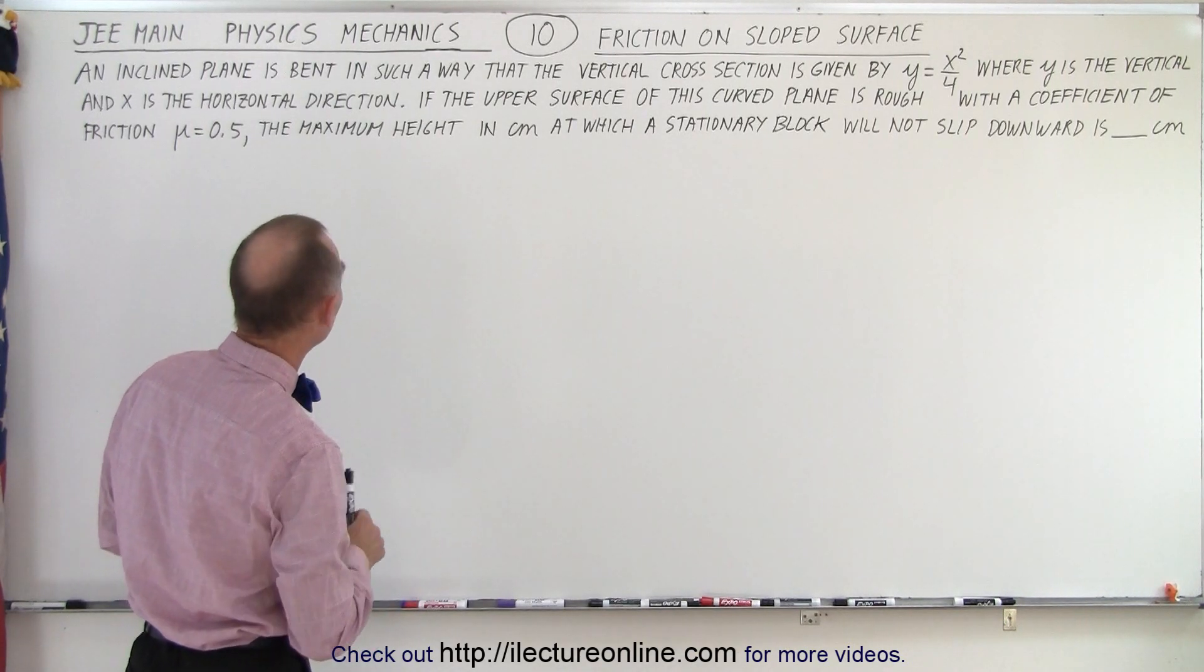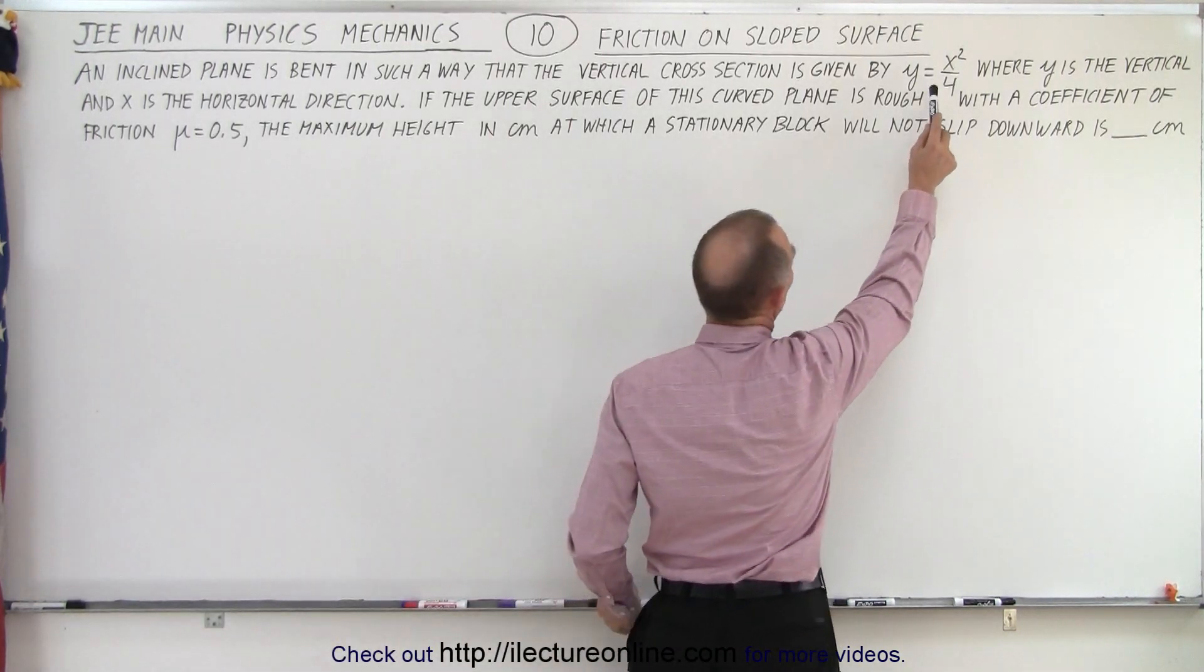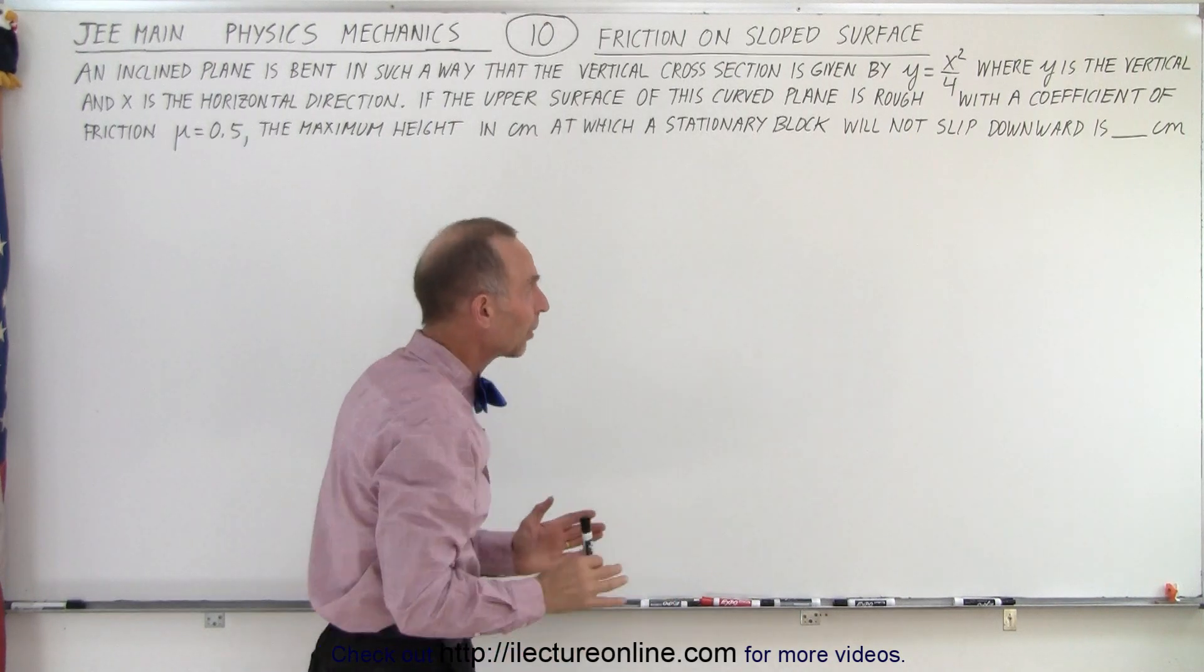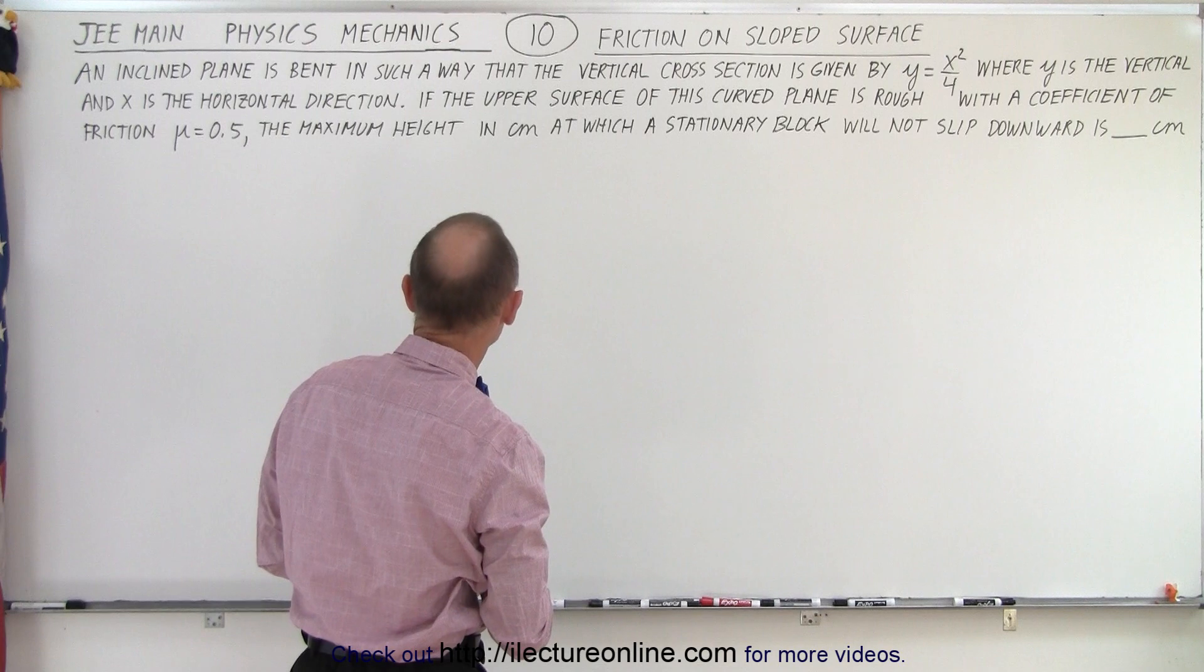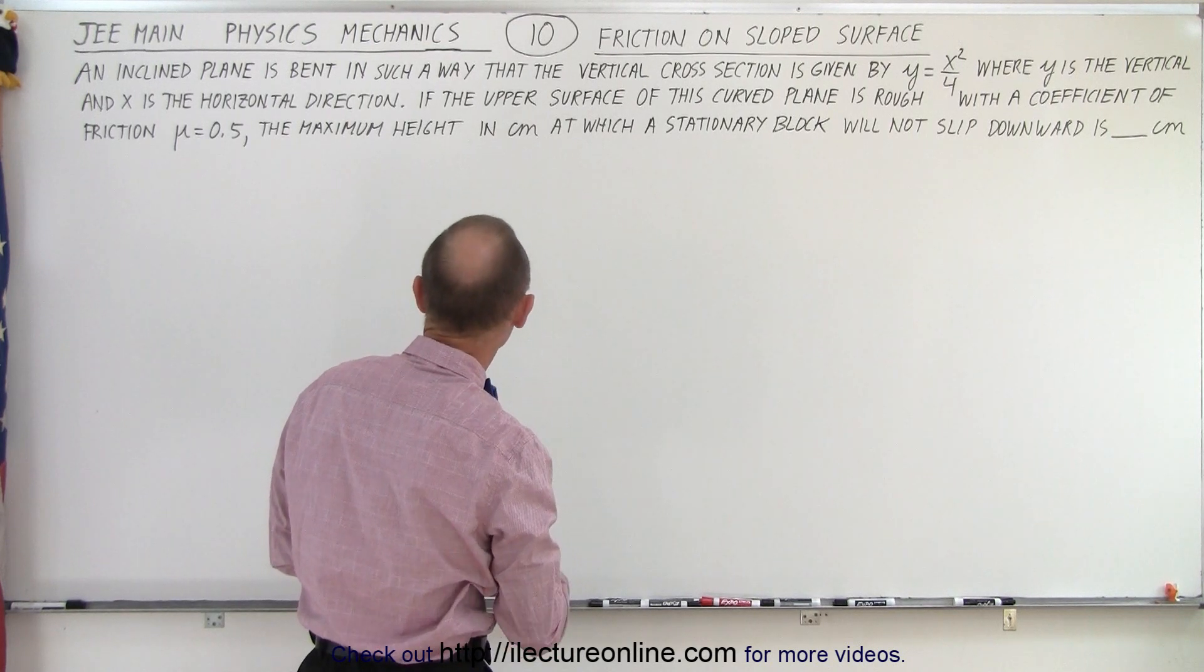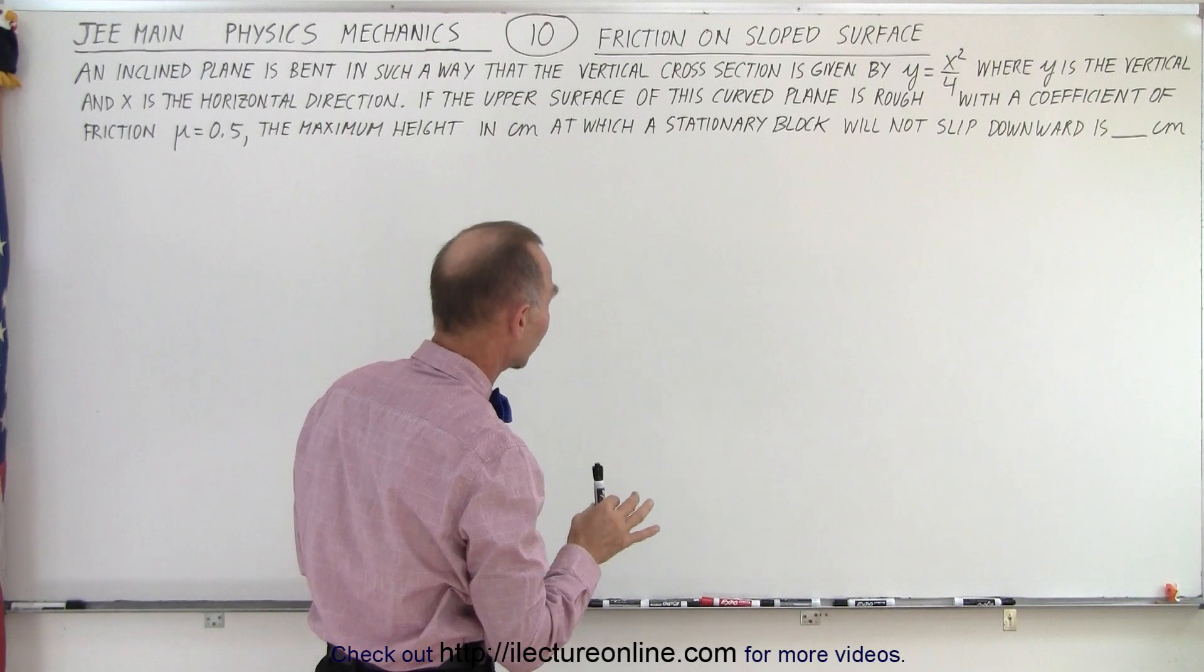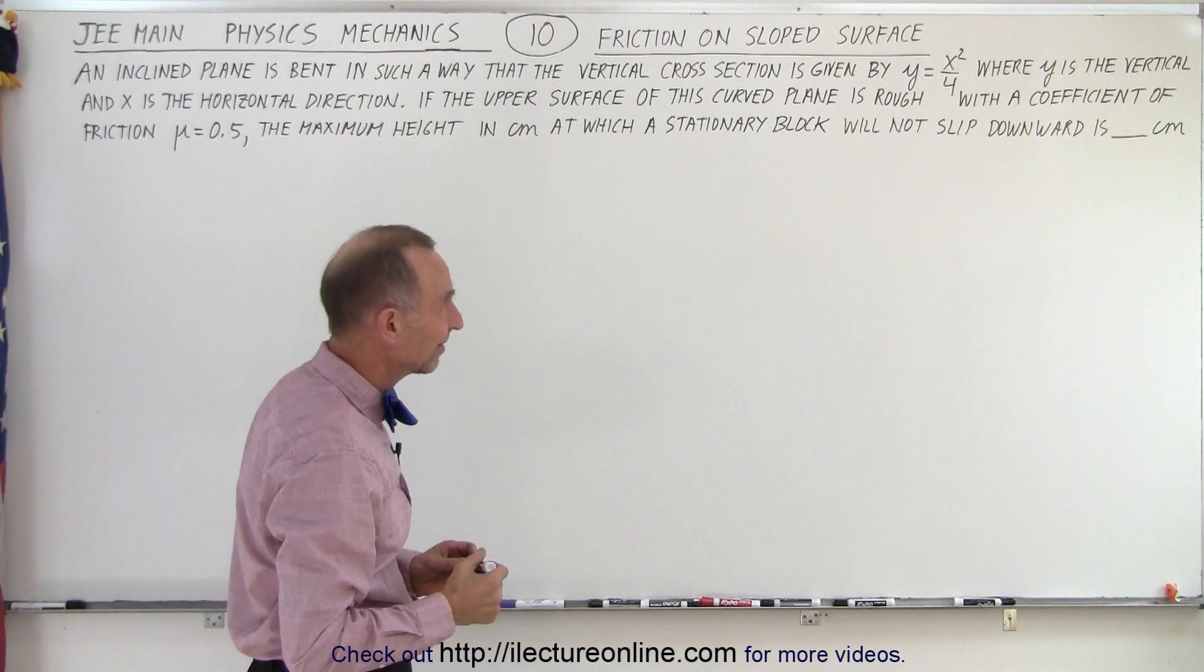An inclined plane is bent in such a way that the vertical cross section is given by the equation y equals x squared over 4. That's the equation of a parabola where y is the vertical and x is the horizontal direction. If the upper surface of this curved plane is rough with a coefficient of friction of 0.5, the maximum height in centimeters at which a stationary block will not slip downward is, and we have to give the answer in centimeters.